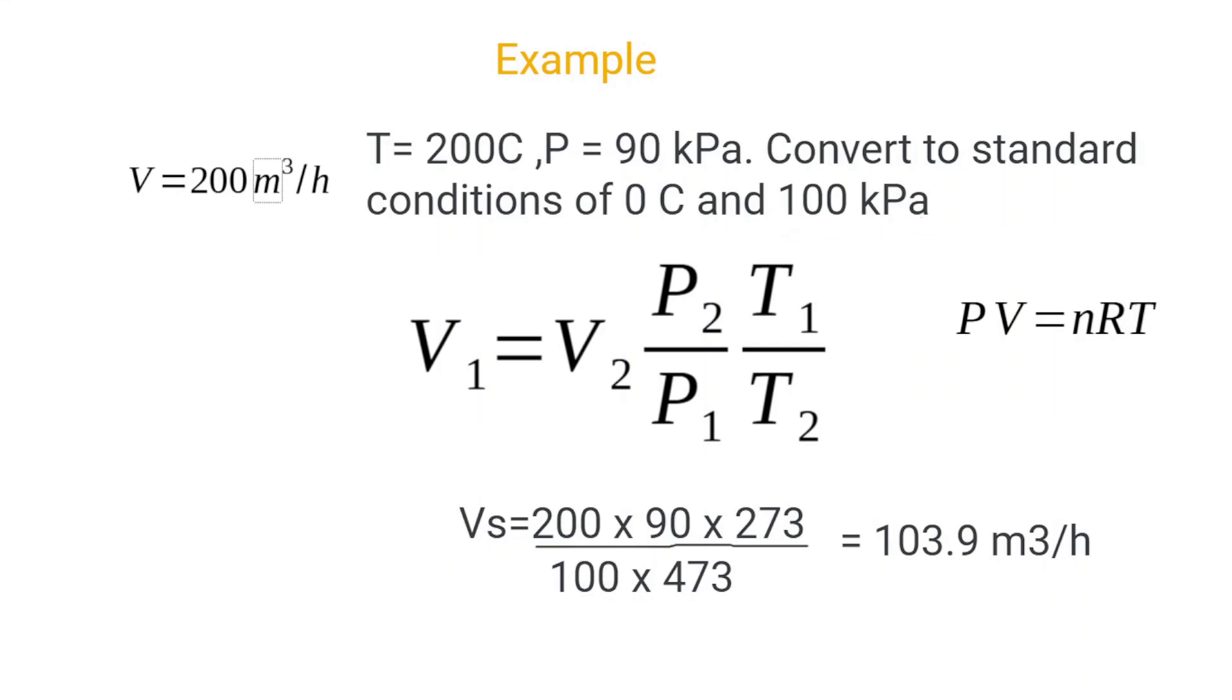Okay, so that is how you normalize flow rates. This will also work for velocities because if you think about it, you get a velocity from a volumetric flow rate. You simply divide by the area. And the area of the stack is not affected by the conditions at which you measure it. So therefore, this relationship remains true.